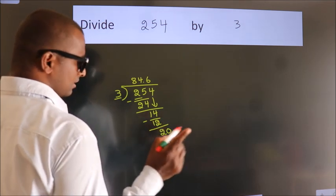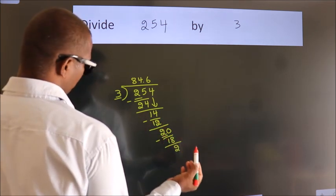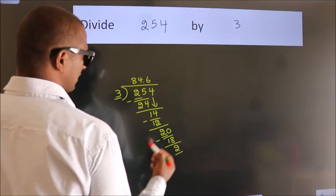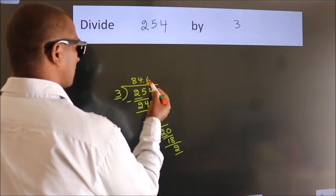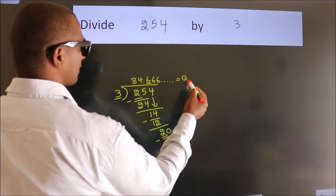Now, you observe. We had 2 here, and we got 2 again. That means this number will keep on repeating. So, this is our quotient.